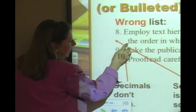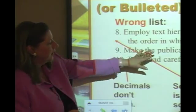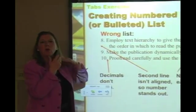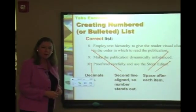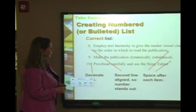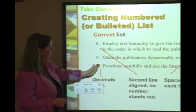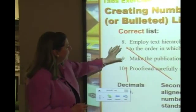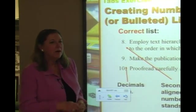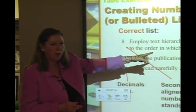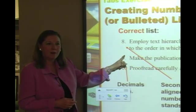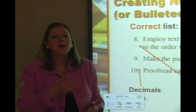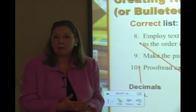The second-line text also needs a tab so it aligns with the first line's text, not the number. And notice everything runs together without space after. Now look at a properly created bulleted or numbered list: the decimal tab aligns correctly, the second line aligns properly, and there's space after each item. The problem with a hard return here is it would generate another number — that's why you use space after instead of extra hard returns.